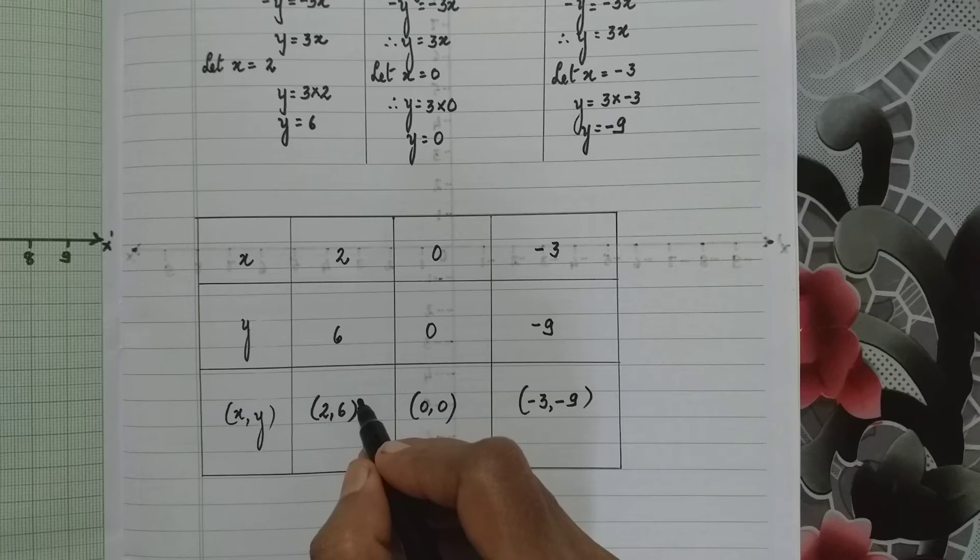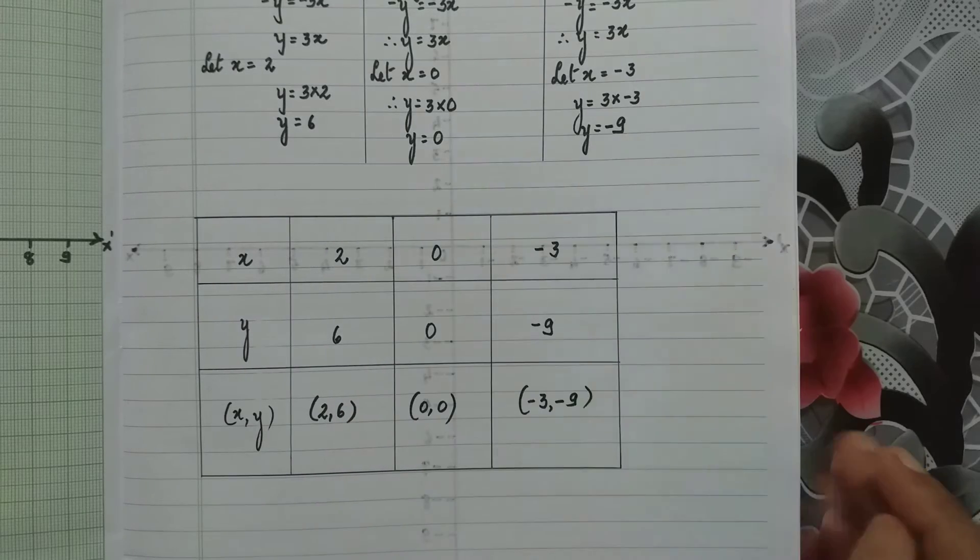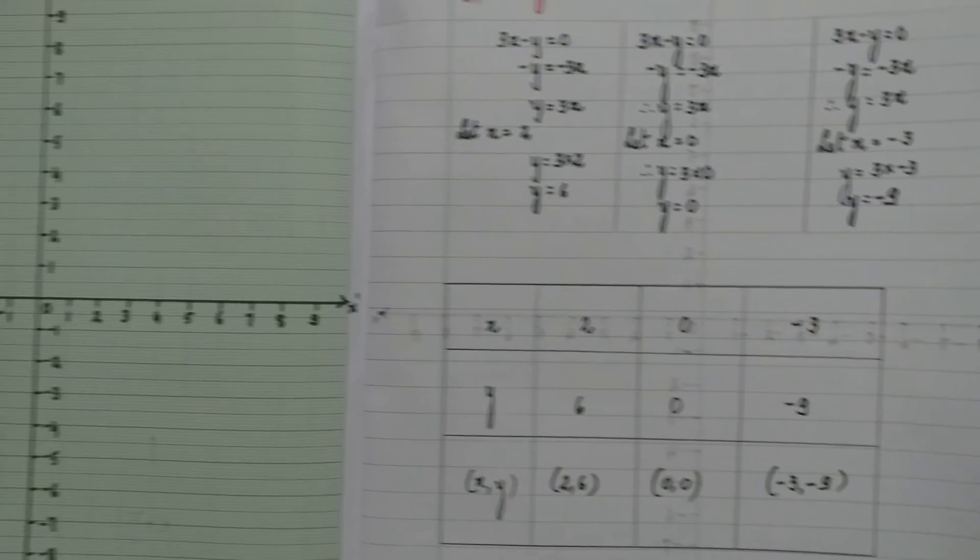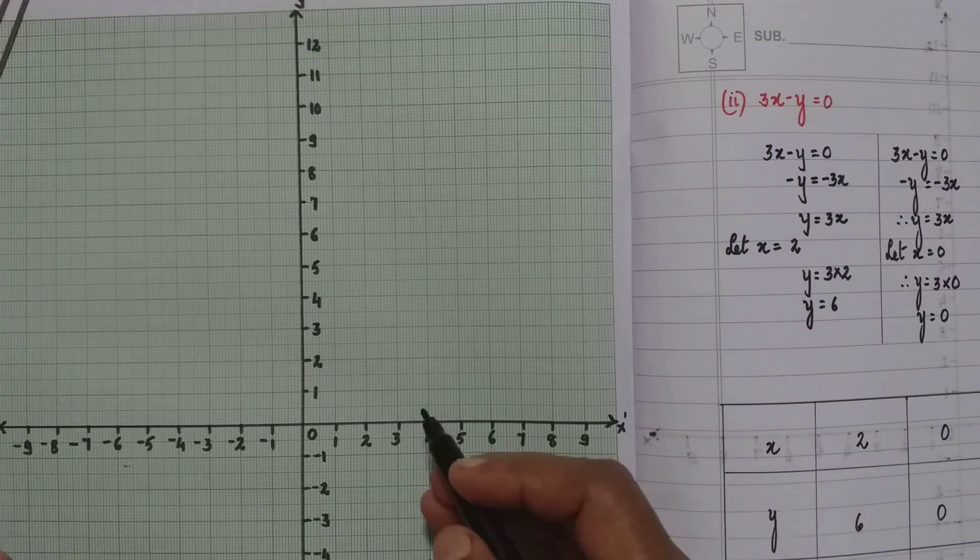Now look at the coordinates here. 2, 6. Both are positive. Therefore it lies in the first quadrant. So look at the graph paper. 2 on the x-axis, 6 on the y-axis.